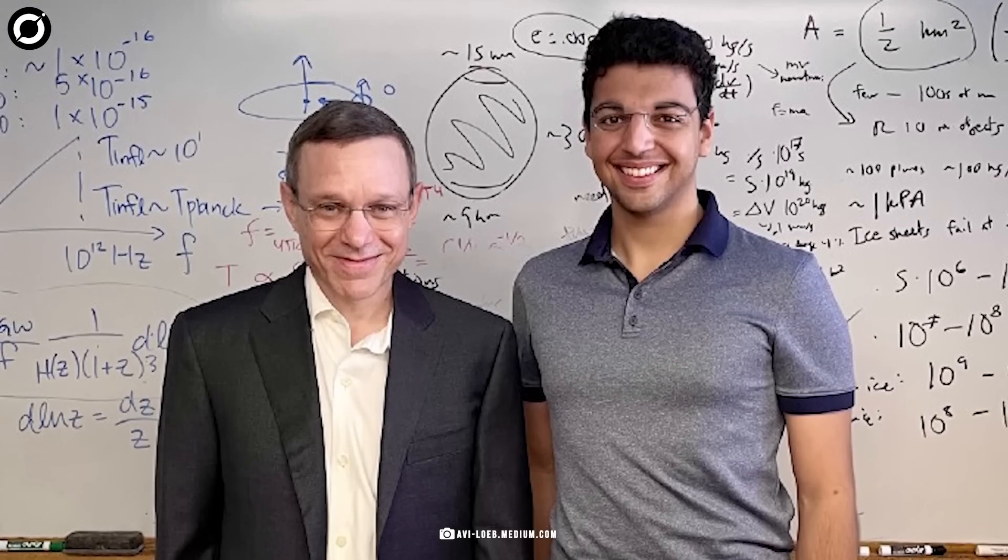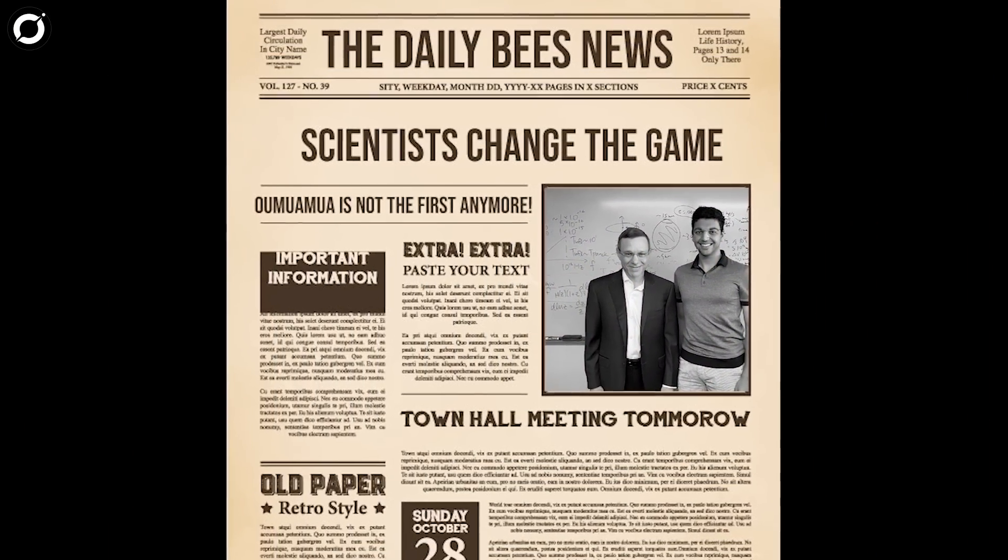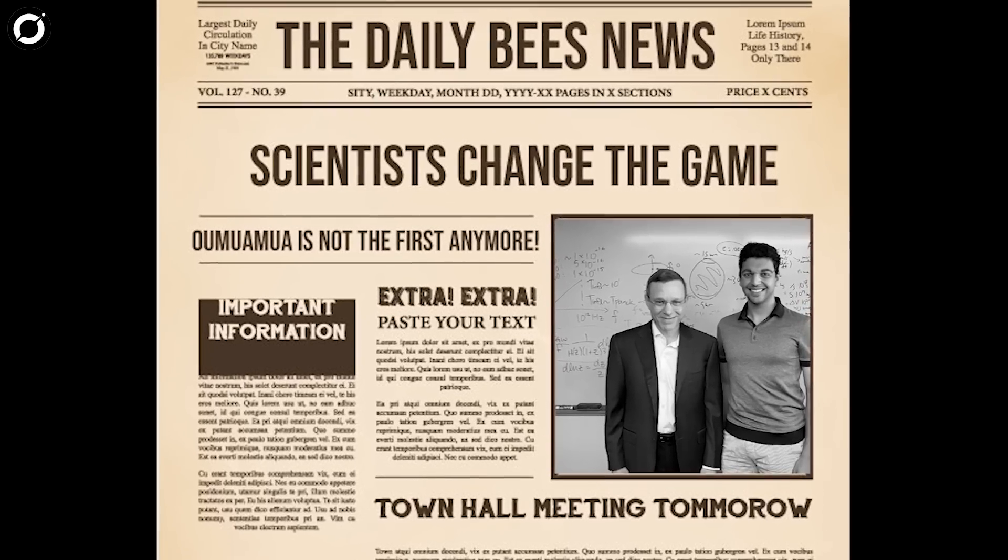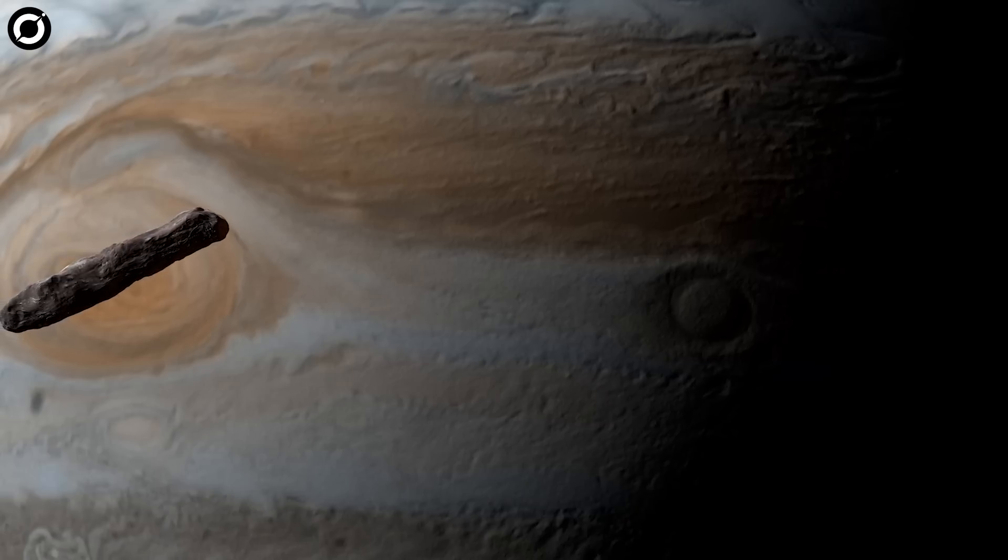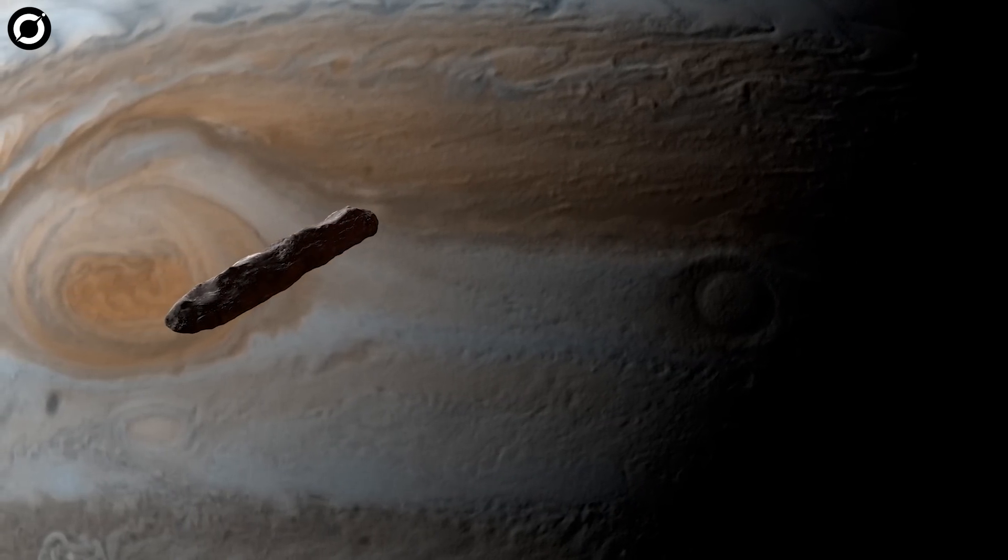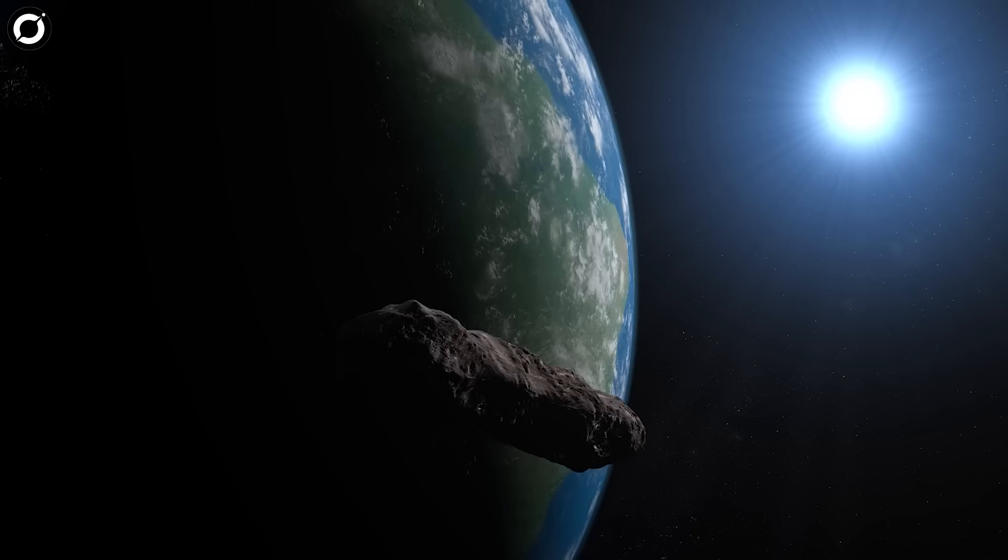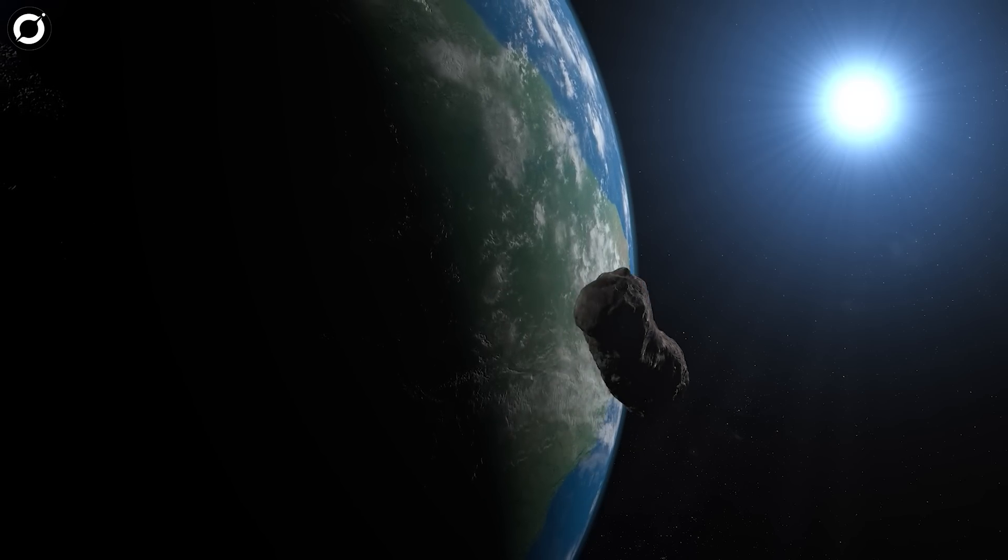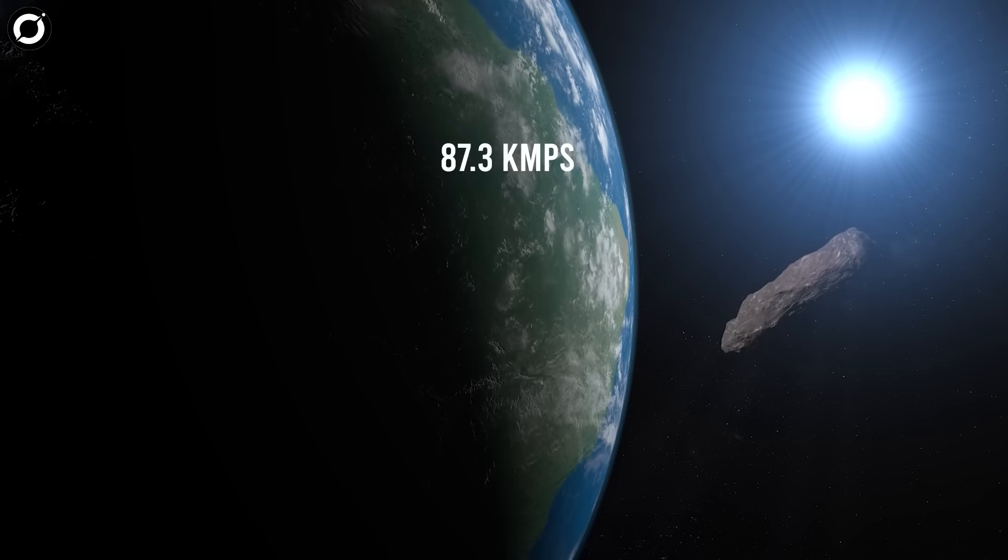It took the two researchers, Avi Loeb and Amir Sairaj, three years to have the government accept the origin of the interstellar object and make it public. The story starts in April 2019, when Avi Loeb was eight months into the study of data of Oumuamua, which was then considered to be the first interstellar visitor to the solar system. Now here is an information that you would want to hold on to.